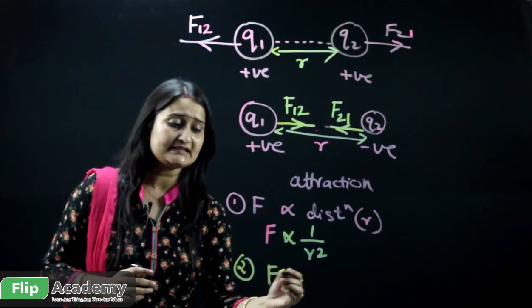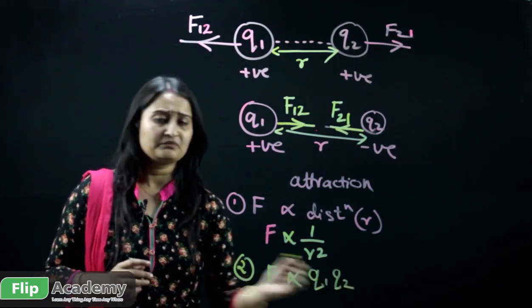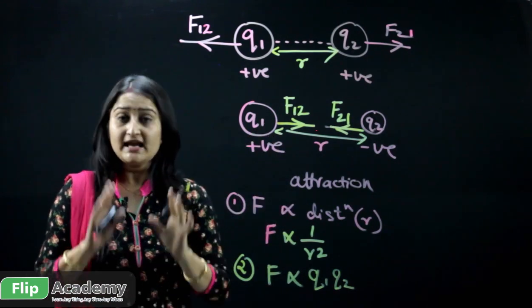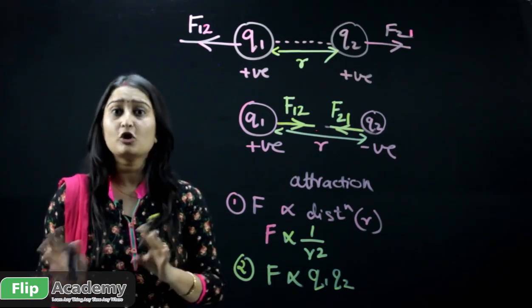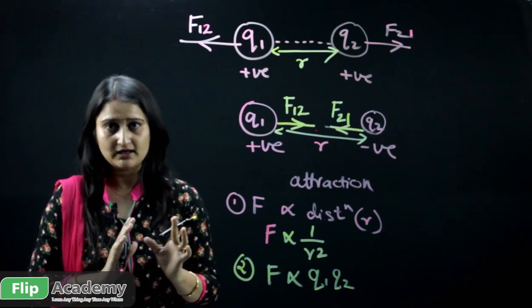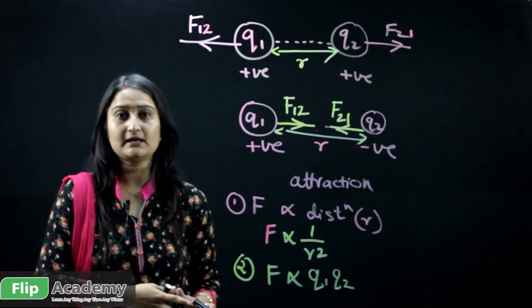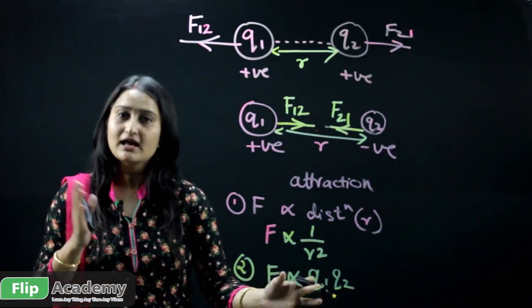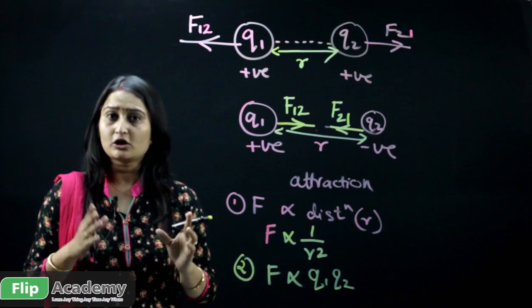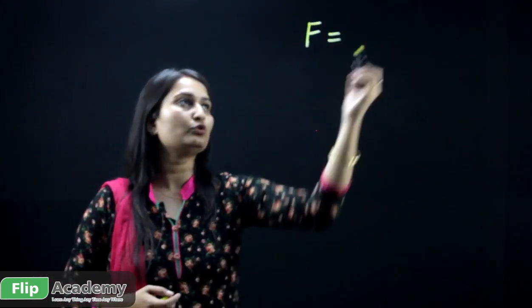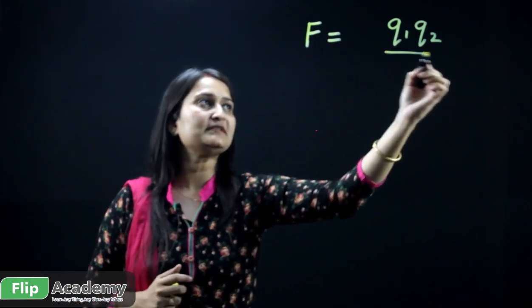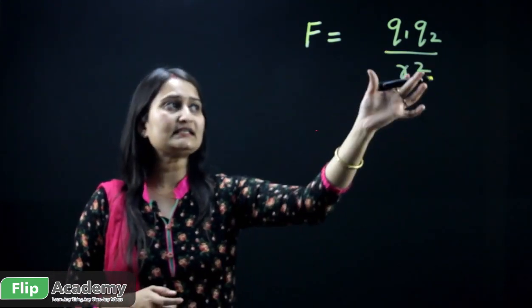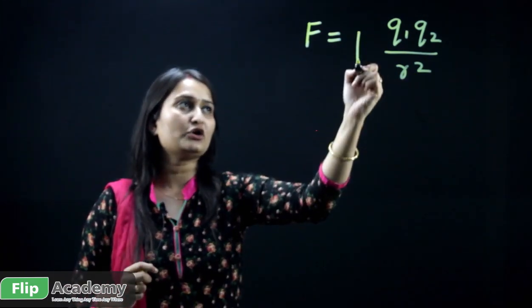The second point is that force is also related to Q1 and Q2. If Q1 and Q2 change their polarity, there is some influence on the force as well. Coulomb stated that force is also dependent upon the charges. Based on these parameters, Coulomb formulated a law: the Coulomb force F equals the product of charges Q1 and Q2 divided by the square of the distance R, related by a constant K.